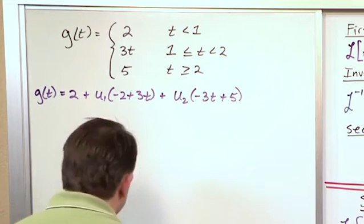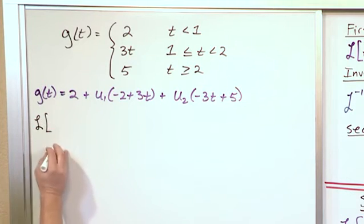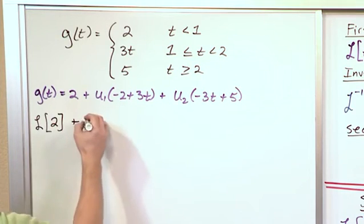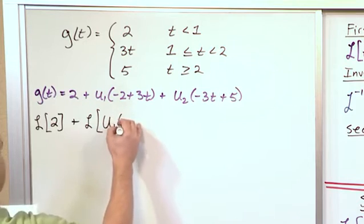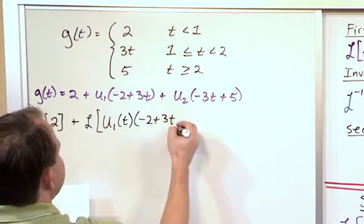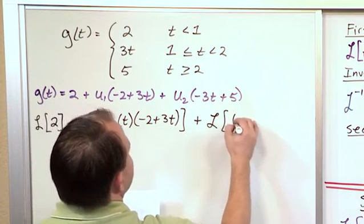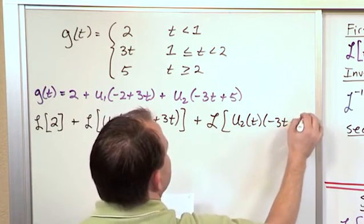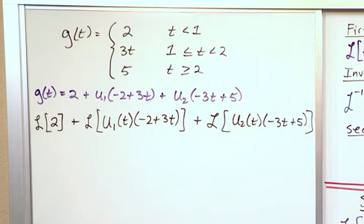Now what we want to do is find the Laplace Transform. The Laplace Transform of this function is going to be the Laplace Transform of each term individually. So we'll have the Laplace Transform of 2, plus the Laplace Transform of u1 times negative 2 plus 3t, and then the Laplace Transform of u2 times negative 3t plus 5.